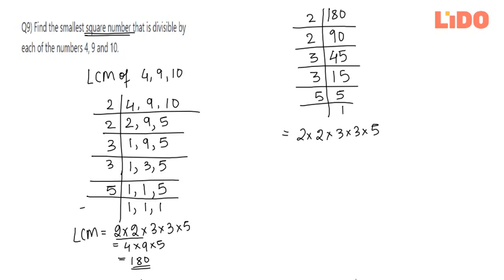Let's group them up and see if we have complete groups. We have a group of 2, we have a group of 3, a group of 5 is missing. So to make 180 a perfect square, I will multiply it by 5 to complete the group. I'm going to multiply 180 by 5 which gives me 900. So the smallest square number that is divisible by 4, 9 and 10 is 900.